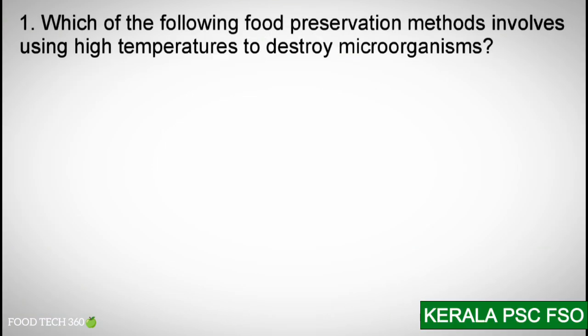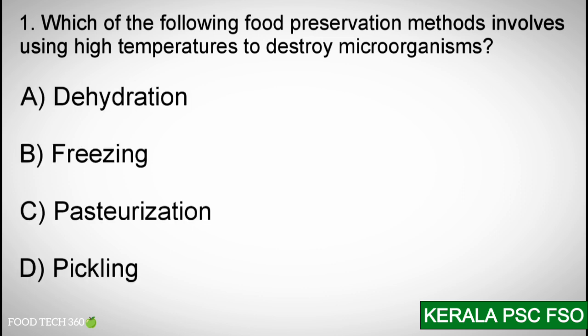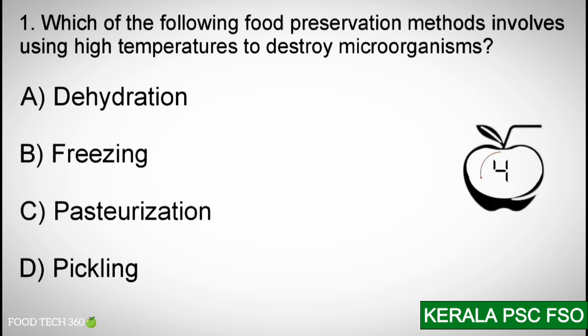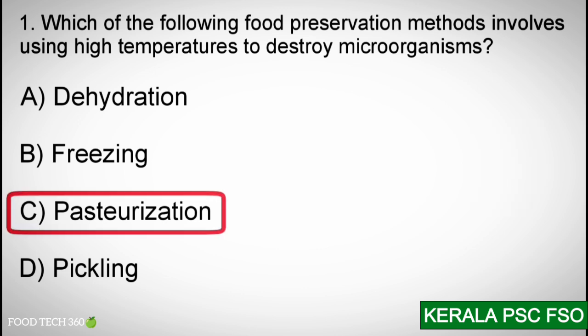Question number 1: Which of the following food preservation methods involves using high temperature to destroy microorganisms? A. Dehydration, B. Freezing, C. Pasteurization, D. Pickling. Correct answer: C. Pasteurization.